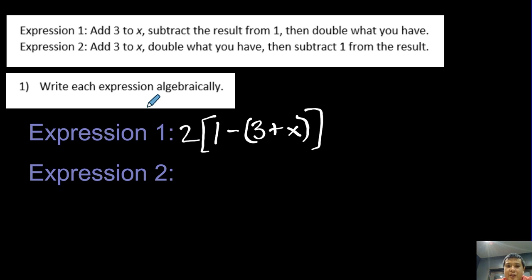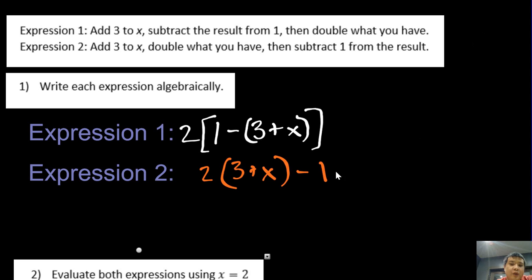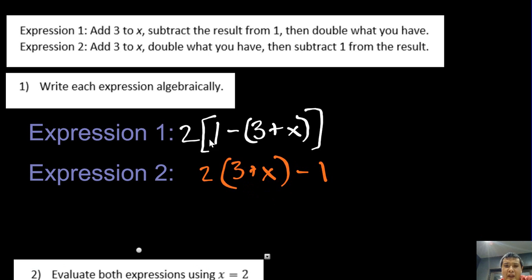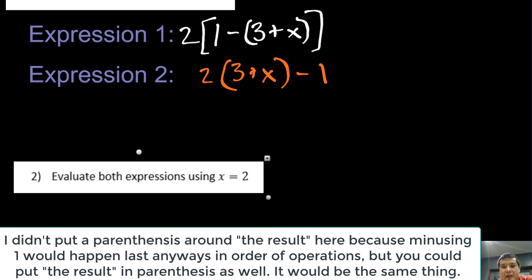For expression 2: add 3 to x, double what you have, then subtract 1 from the result. Go ahead and try this one on your own. What you should have found is 2 times (3 plus x) minus 1 — we add 3 to x, then double the entire thing by multiplying by 2, and finally subtract 1 from that result.